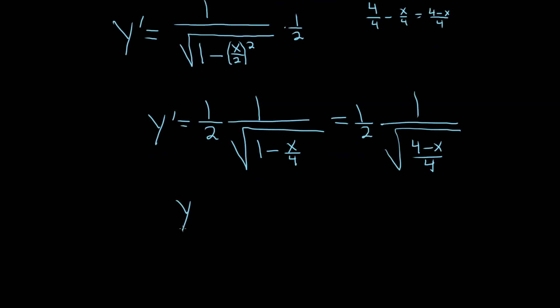So this is equal to 1 half times 1 over—there's a property of square roots that says you can take the square root of each piece. So this is the square root of 4 minus x over the square root of 4.